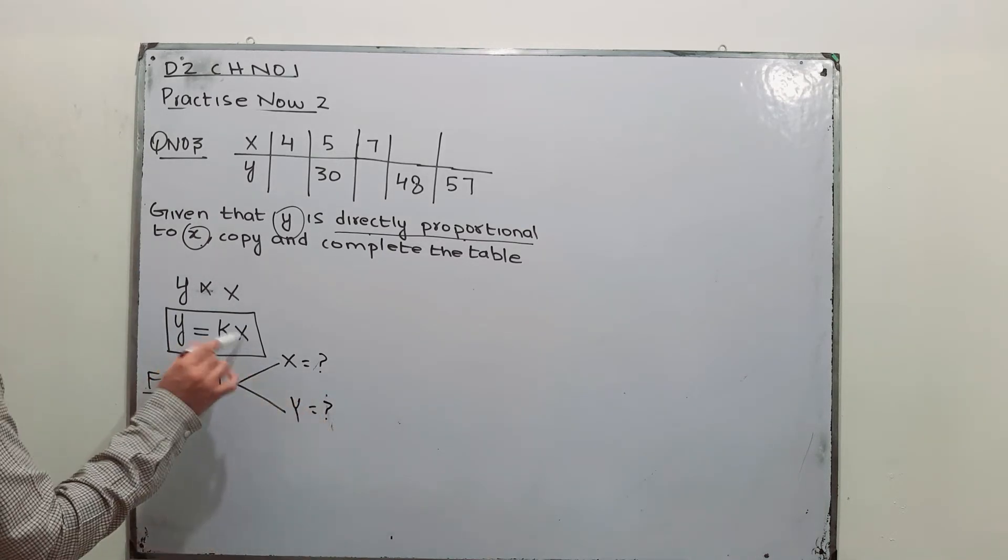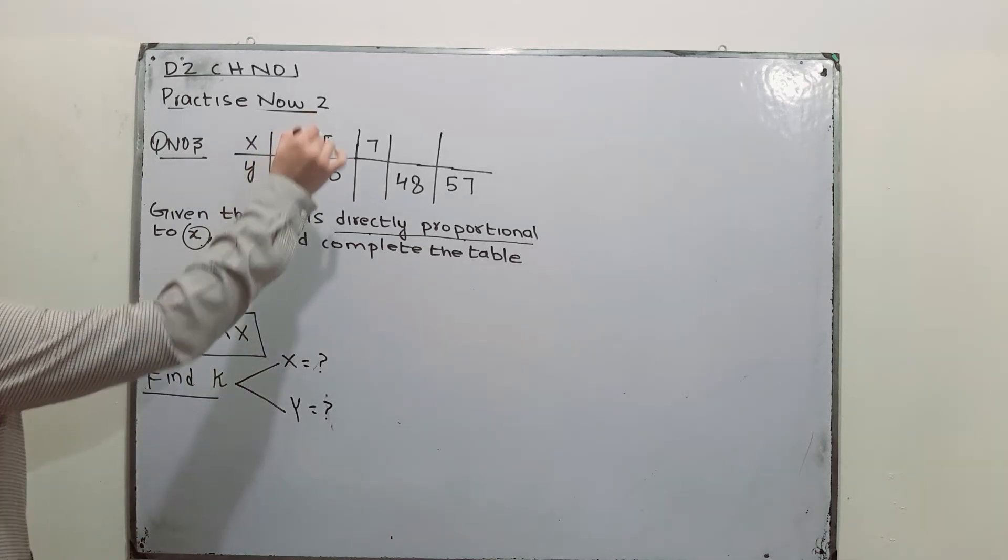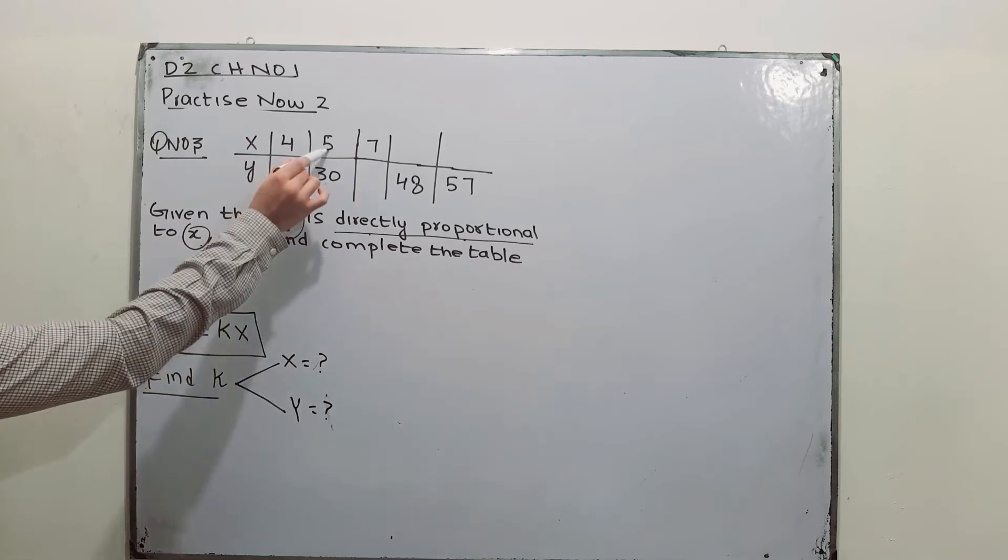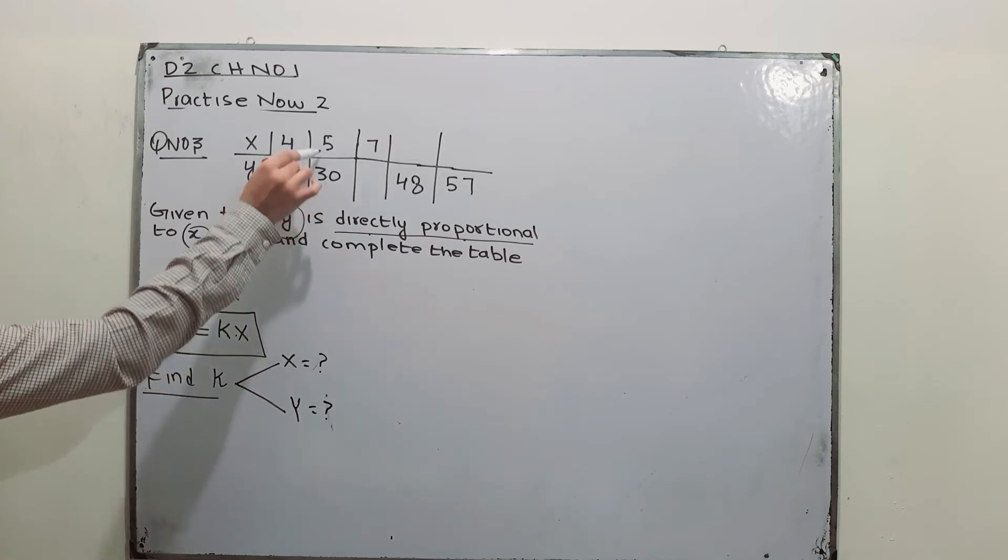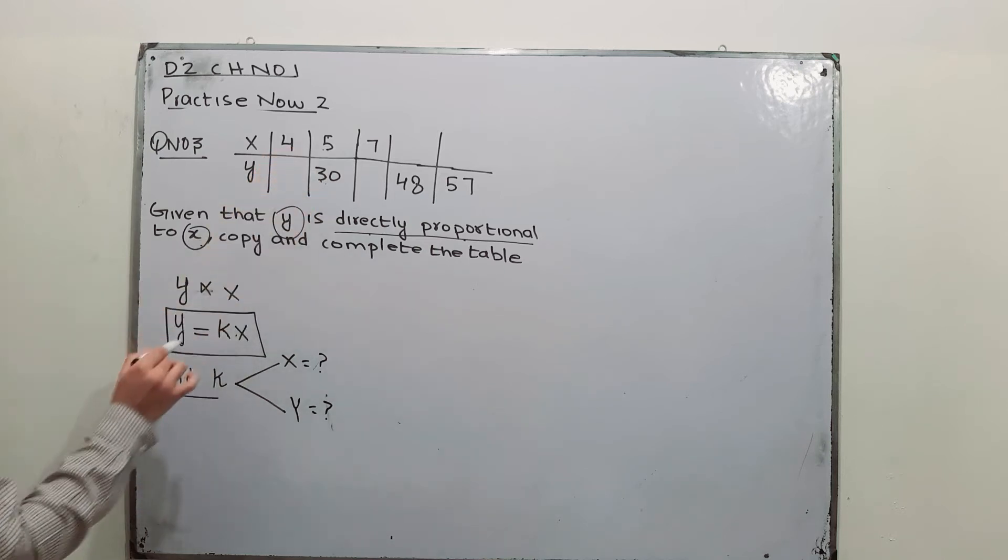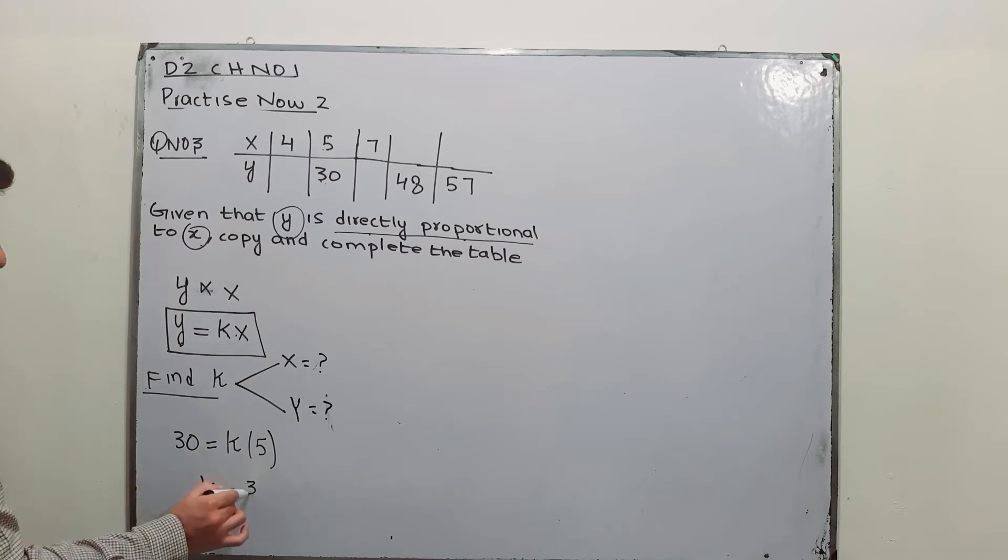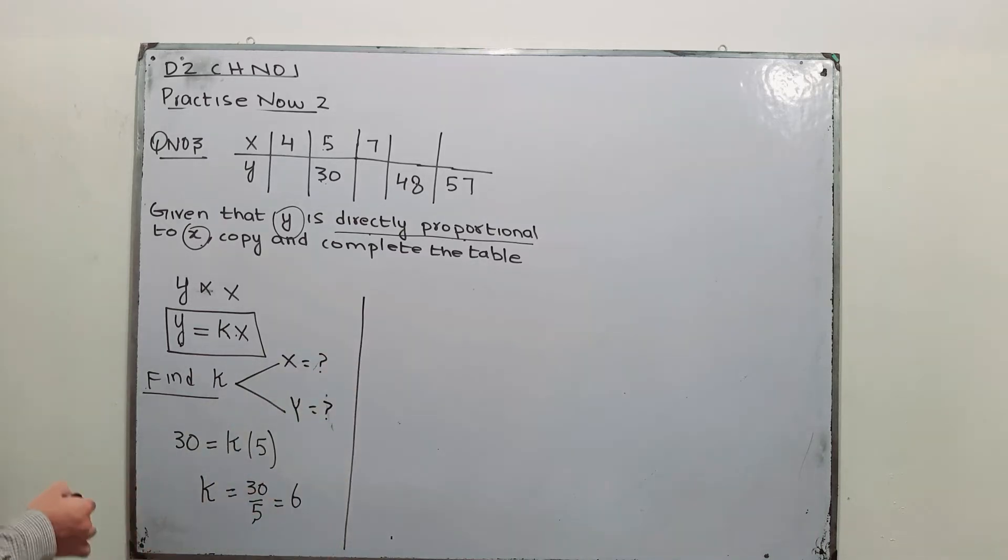Because using X and Y in this equation, use X equal to 5 and Y equal to 30 because when X is 5, Y is 30. So Y is 30 and X is 5, so K will be 30 over 5, well that is equal to 6. The first step is over.